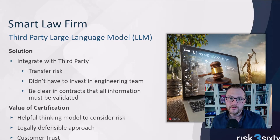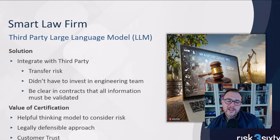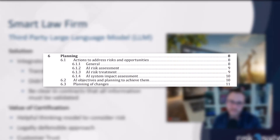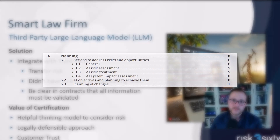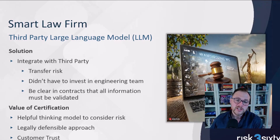So what's the value of certification for a company like this? Number one is before considering ISO 42001, they didn't really have a thinking model — they didn't have a way to consider what risks exist and what risks do not exist. For example, they had never even heard of an AI impact assessment. They weren't considering the ideas around transferring risk versus accepting a risk. So ISO 42001 gave them a framework to think about risk management principles for AI.